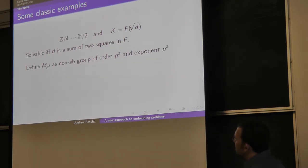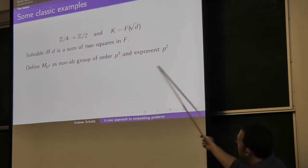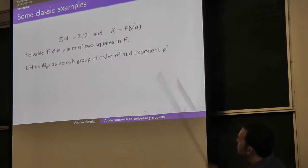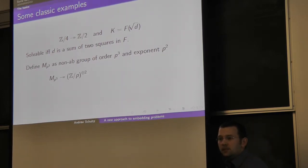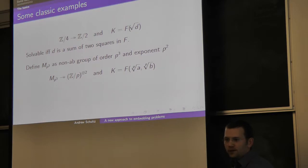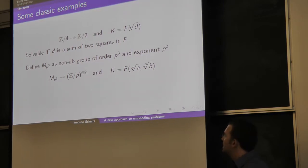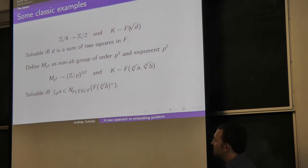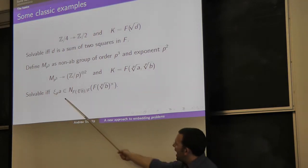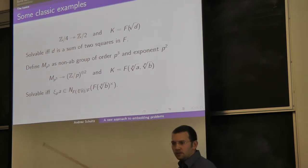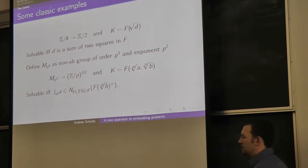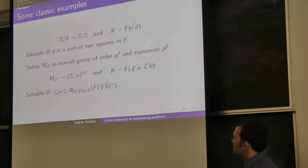There's an extremely similar setup for the other non-abelian group of order p cubed. MP cubed is the non-abelian group of exponent p squared. It also has a natural surjection onto Zp cross Zp, and you attach p-th roots of two things. The solution is when c_p·a is a norm — an arithmetic condition that tells you when this exists.